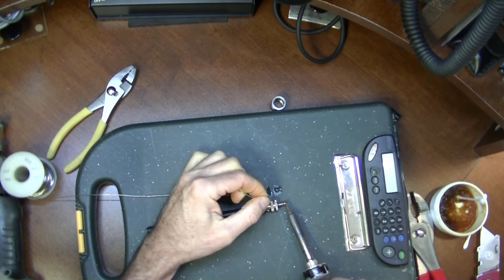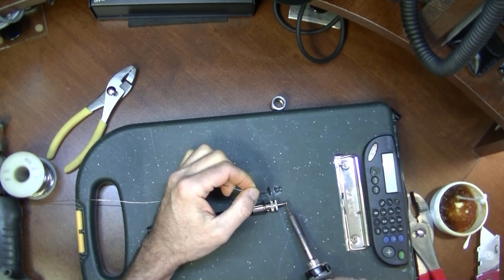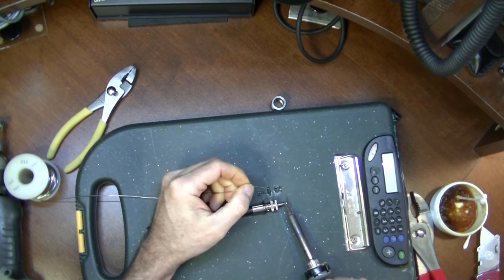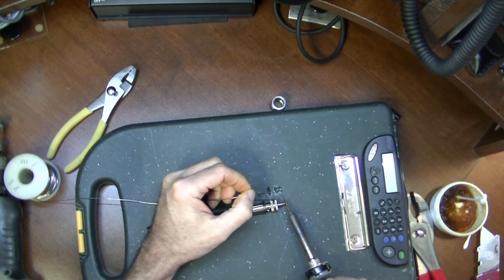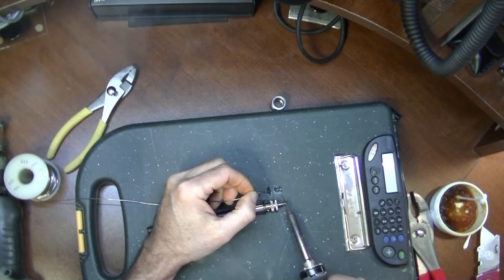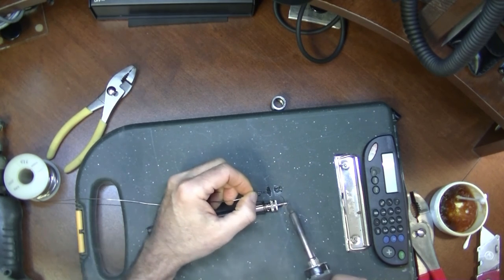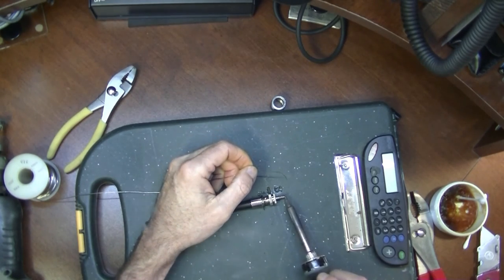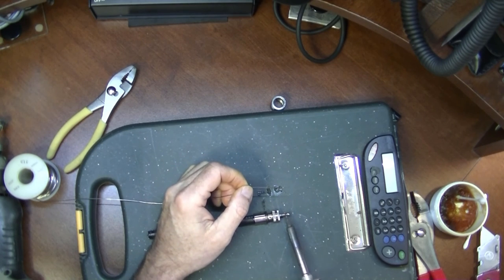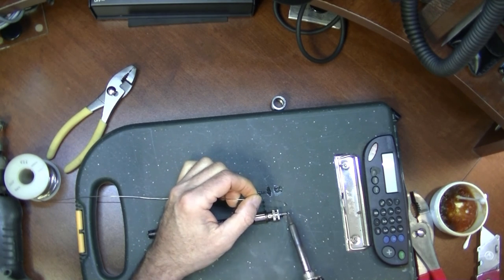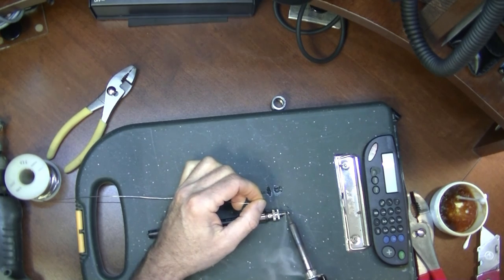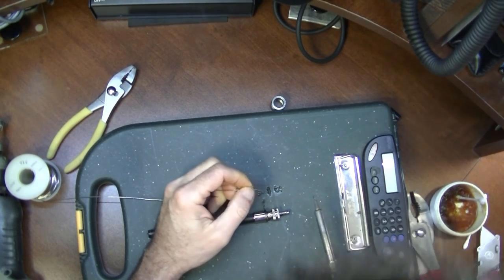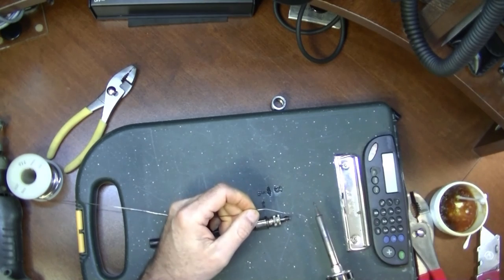And just solder the middle. When you solder this, try not to get the solder here on the outside or it's going to make that center pin too big to go into the SO-239, so try to keep that flat on the outside if you can. I think we got it.